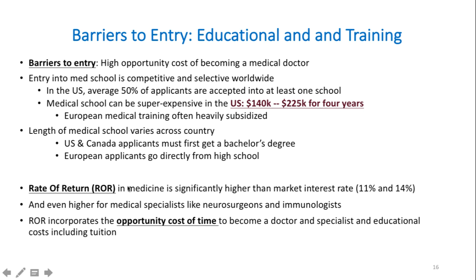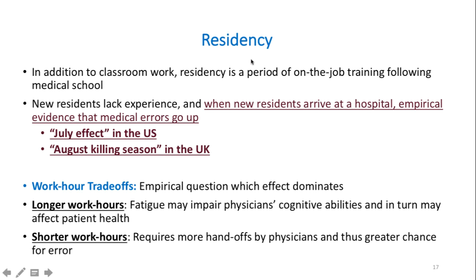To calculate the rate of return on investment in medicine, we look at the opportunity cost of the time students spend in school — often seven years or more, and up to 10–15 years to become a specialist. The biggest opportunity cost is the time spent in school rather than earning income from other jobs. Additional costs include educational tuition. After finishing school, graduates must complete residency.